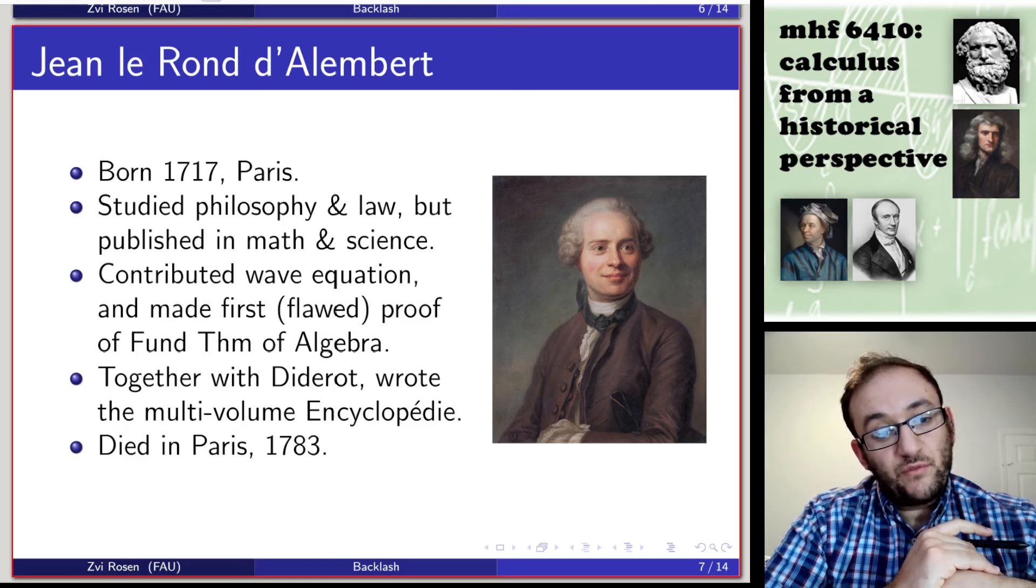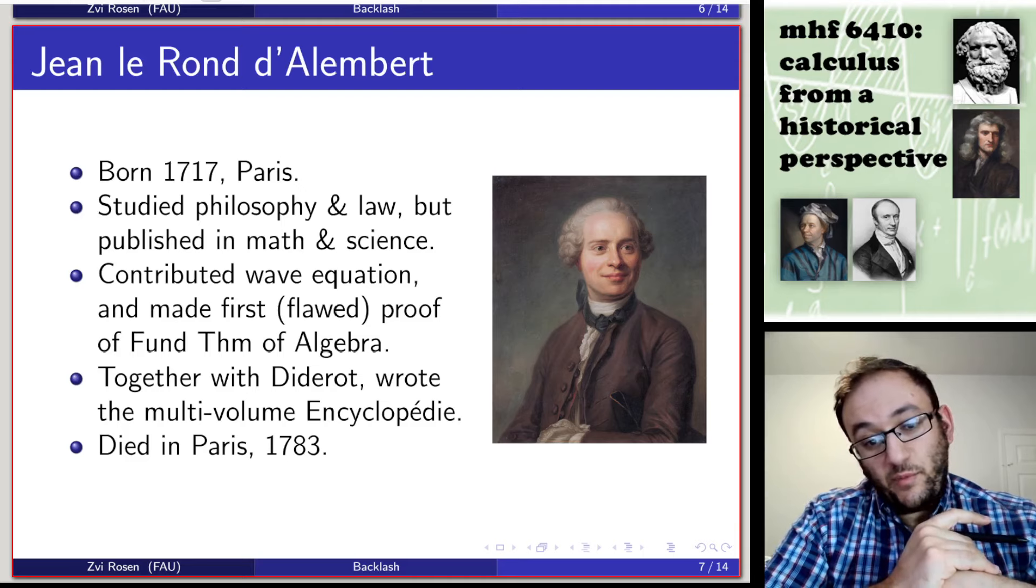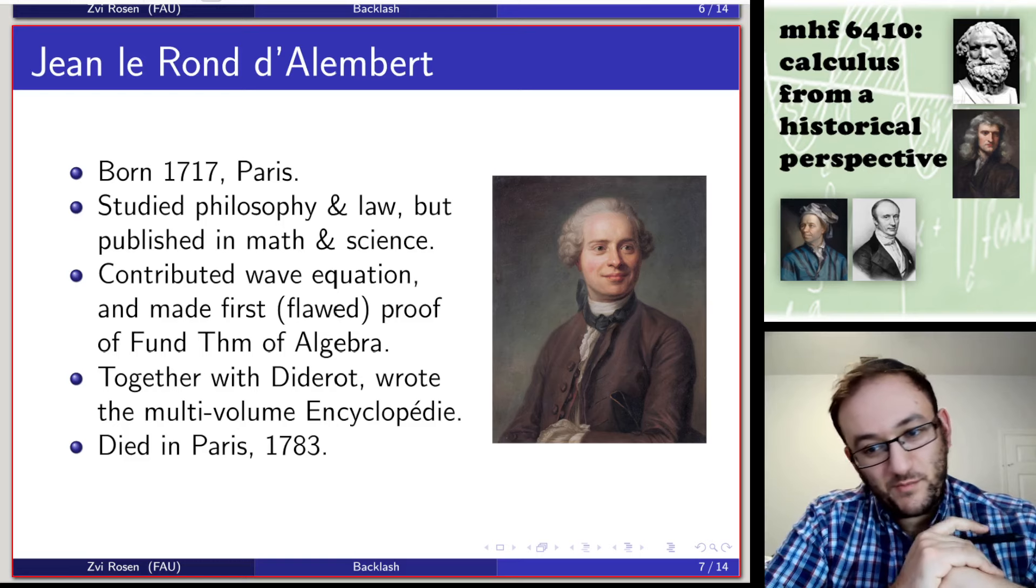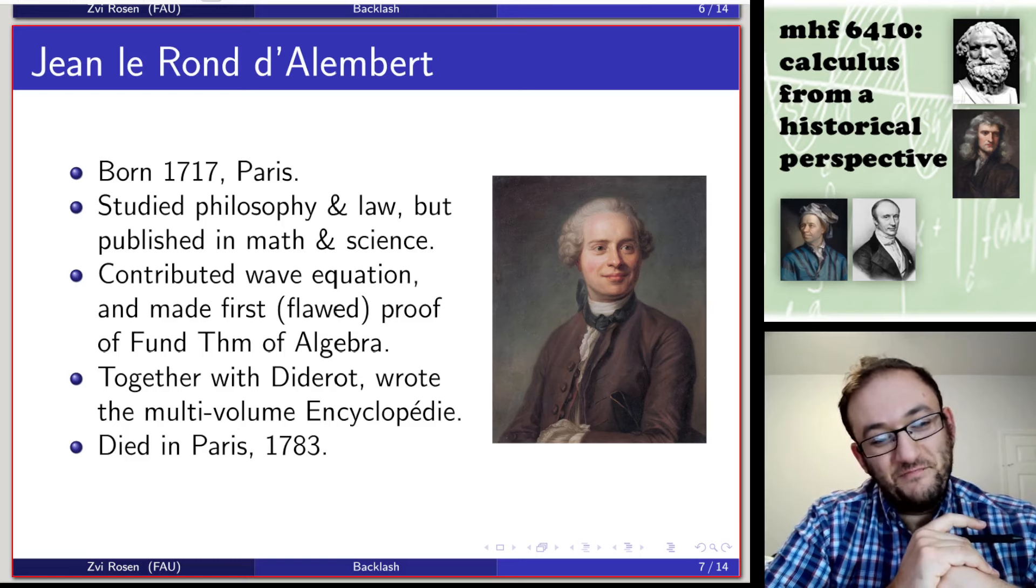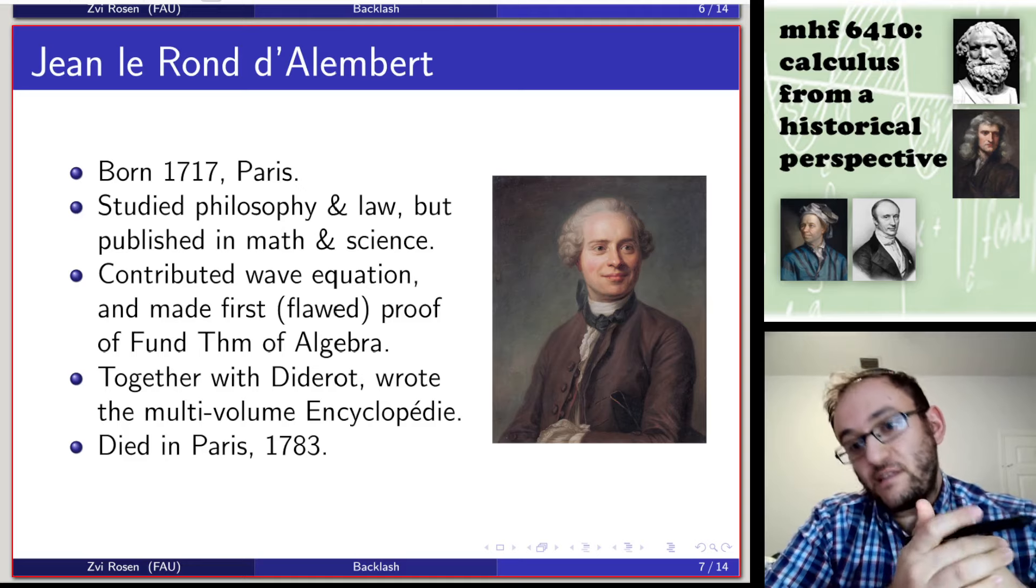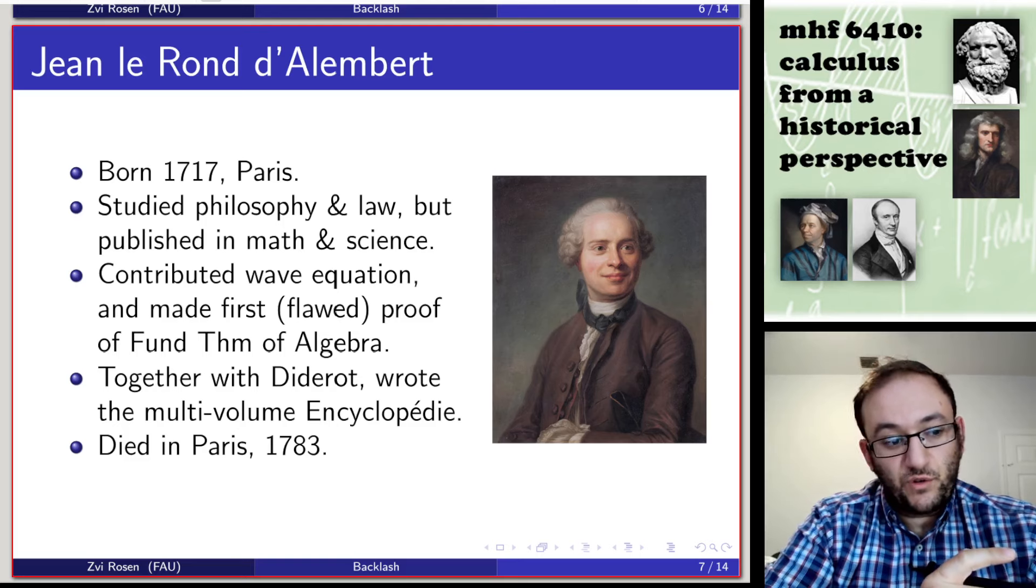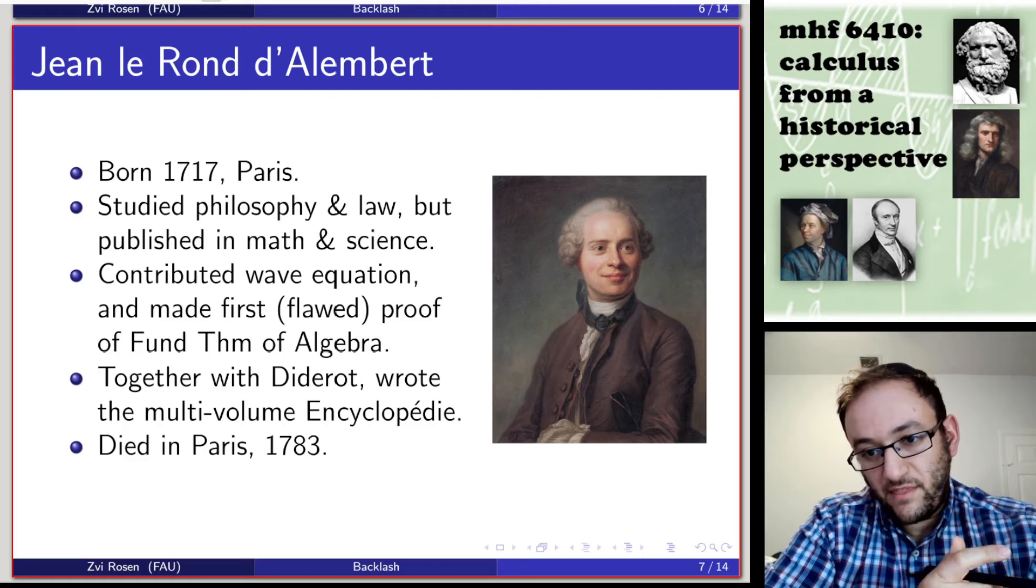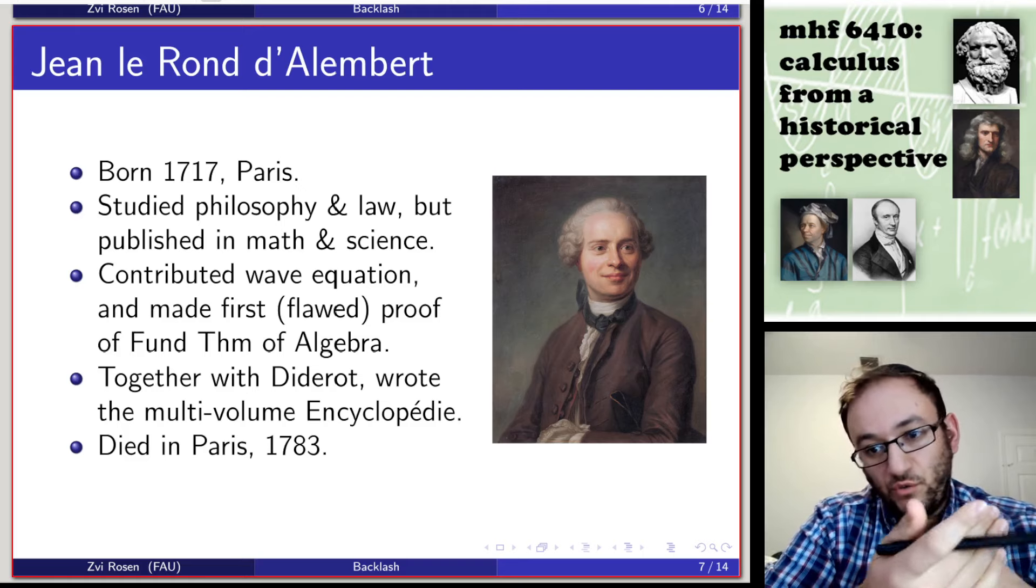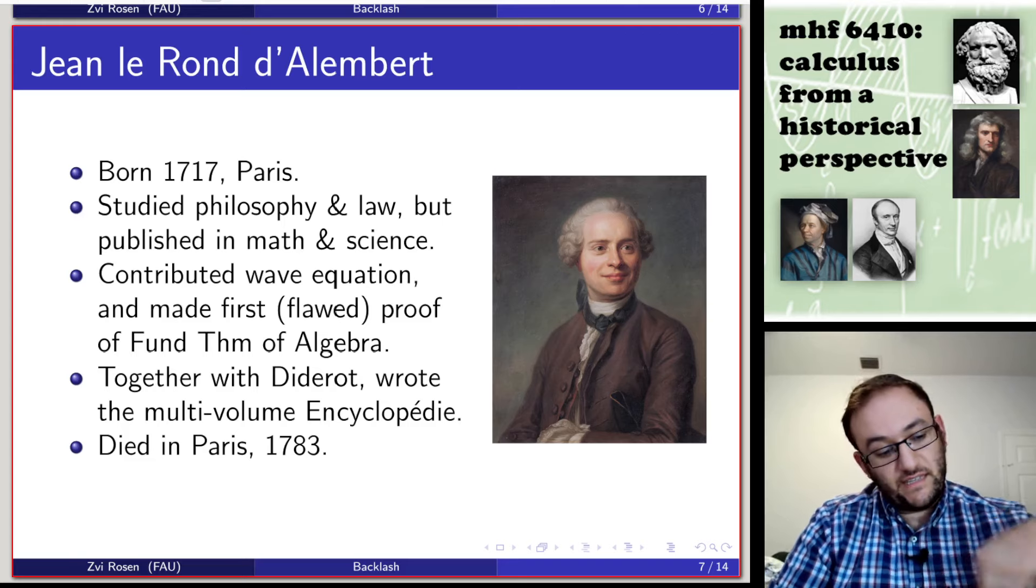Together with Diderot, his huge project was writing the multi-volume Encyclopédie. This was a huge work, which was, as it sounds, an encyclopedia. The idea was to record the principles of Enlightenment thought and how it related to the world around them. He died in Paris in 1783.